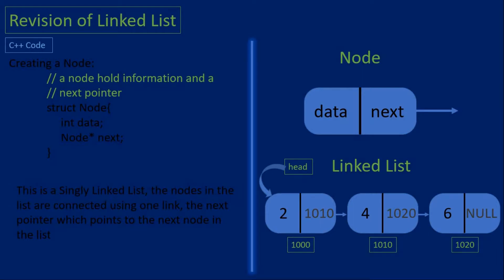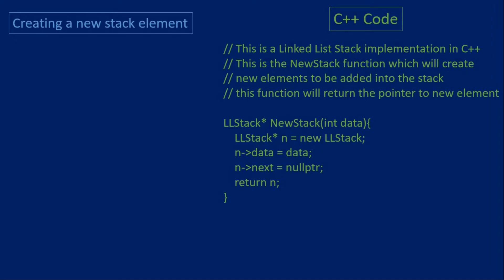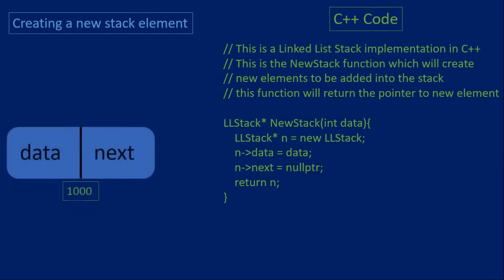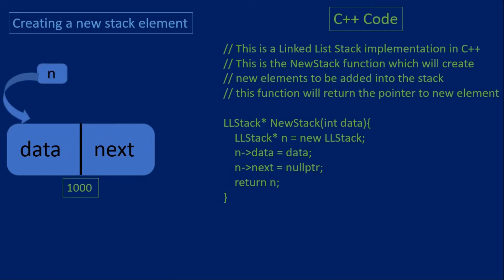The first thing we want to do is create a function that creates instances of a node or element we want to store. This function should return a pointer to the newly created node, so it has a node pointer return type and takes in an integer data value. We create a linked list stack pointer n, set it equal to the pointer returned by the new keyword as it allocates memory, set its data variable to the passed-in data, set the next pointer to null, and finally return the pointer n.